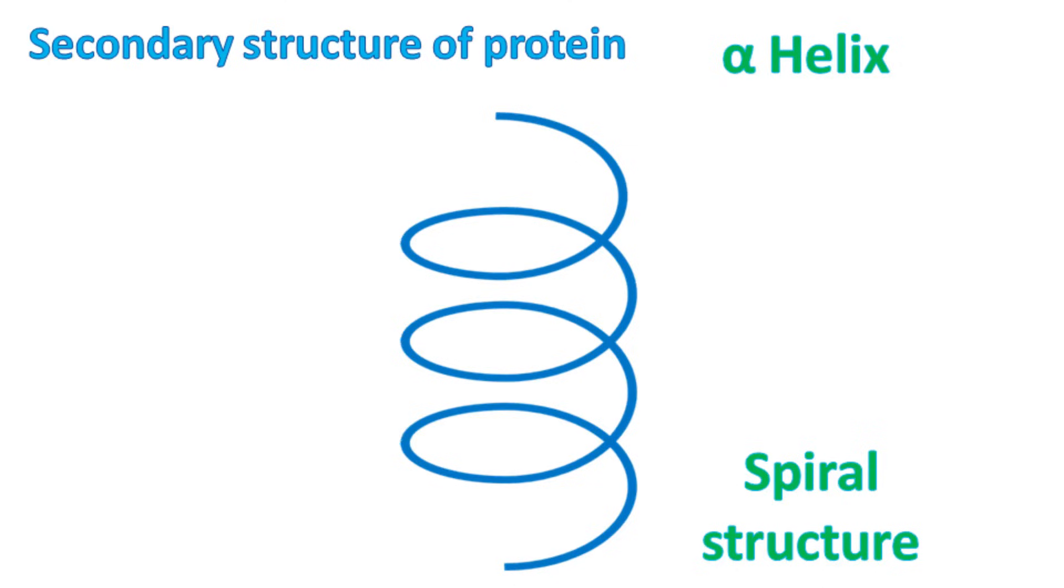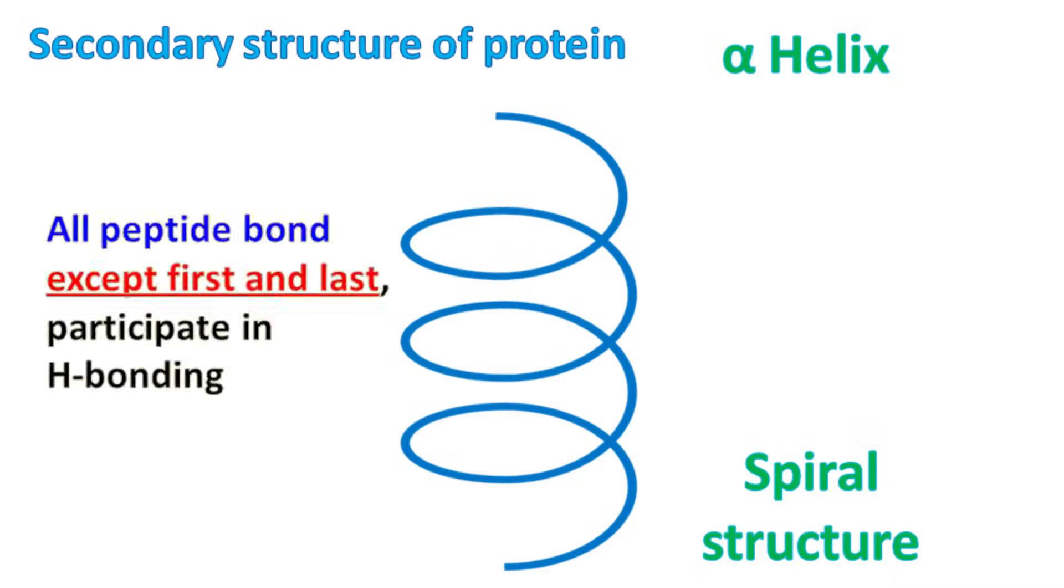The alpha helix is stabilized by hydrogen bonding. This hydrogen bonding is formed between the hydrogen of nitrogen and the oxygen attached with the carbon. Individual hydrogen bonds are weak, but collectively they are strong enough to stabilize the spiral structure. All the peptide bonds except the first and the last participate in the hydrogen bonding.